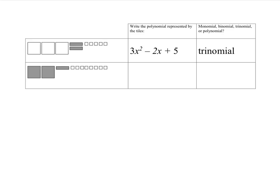In the next example, we have 2 shaded squares — since they're shaded, these are negatives — so we write down negative 2x squared. Then we have one shaded rectangle, which is a negative x, so we write subtract x. Finally, we count up all the little unit tiles and see there are 8, and they're unshaded, so they're positive — plus 8. Again, we have 3 terms and 3 different types of tiles, so this is a trinomial.